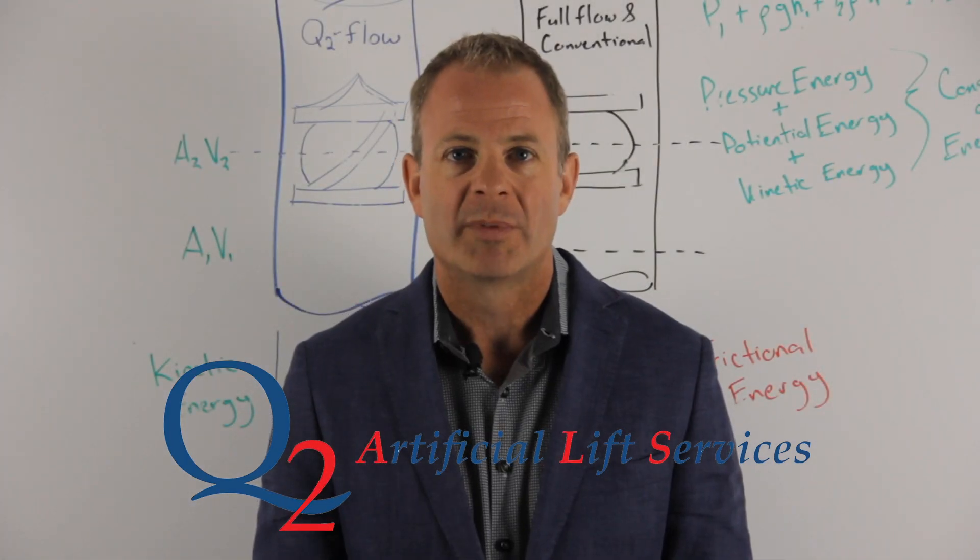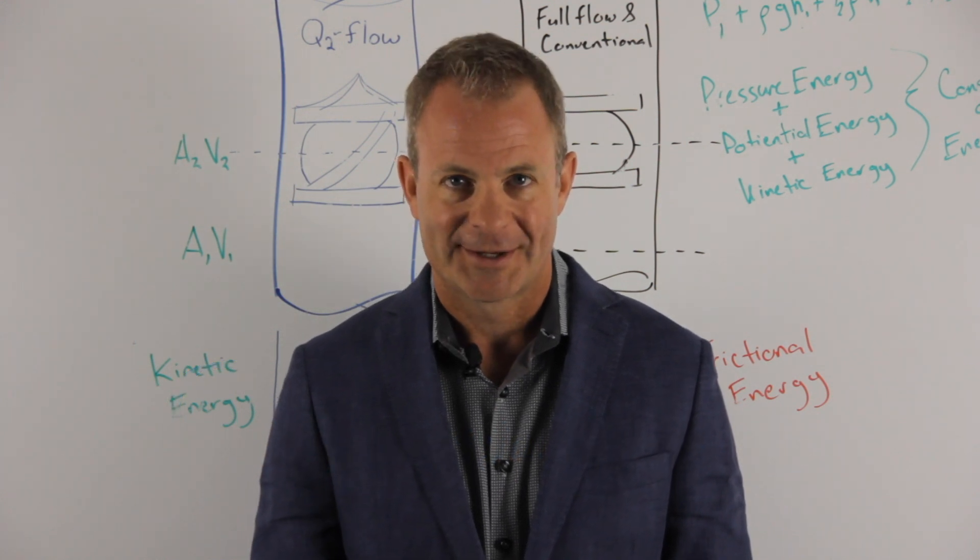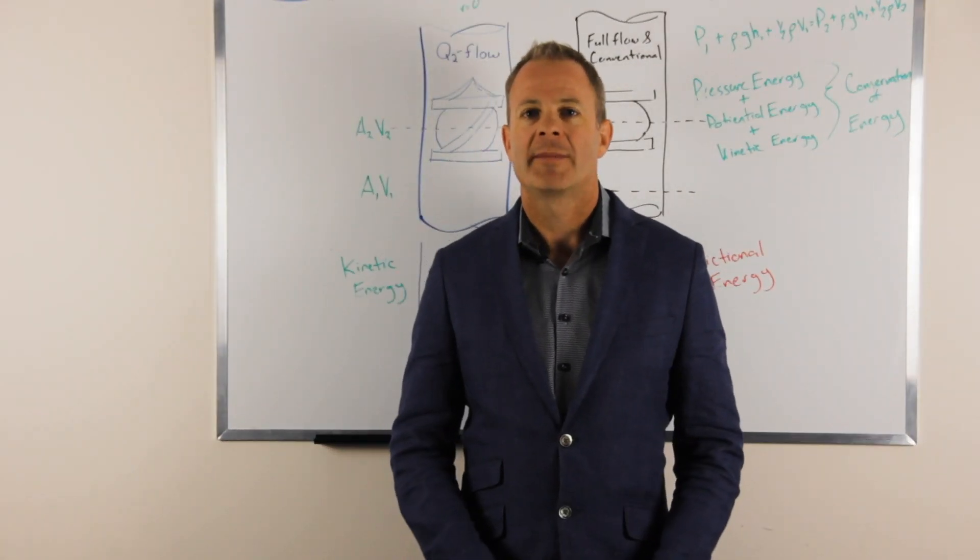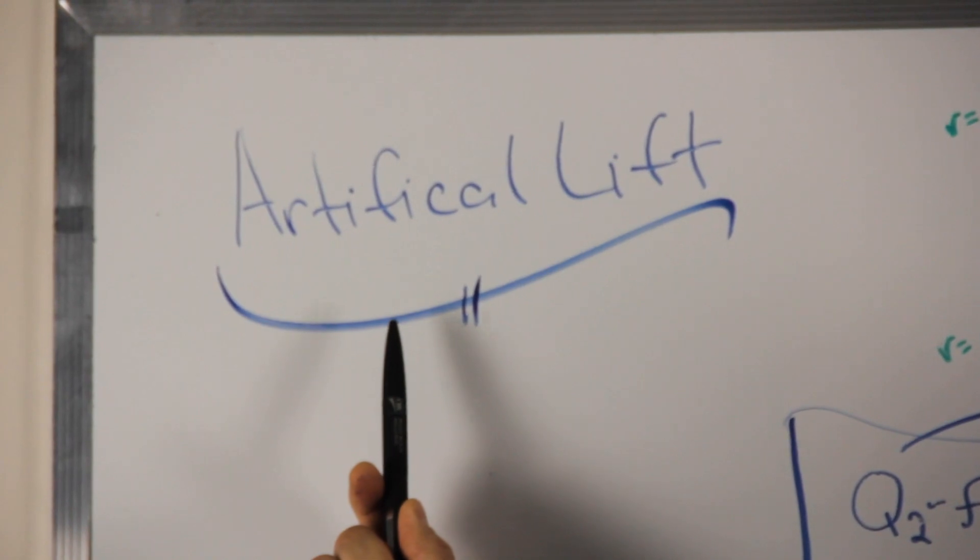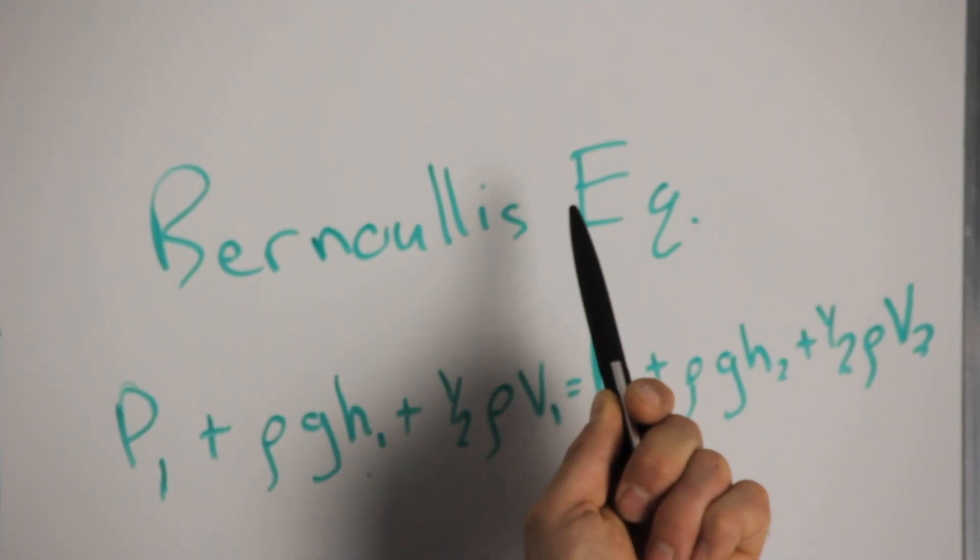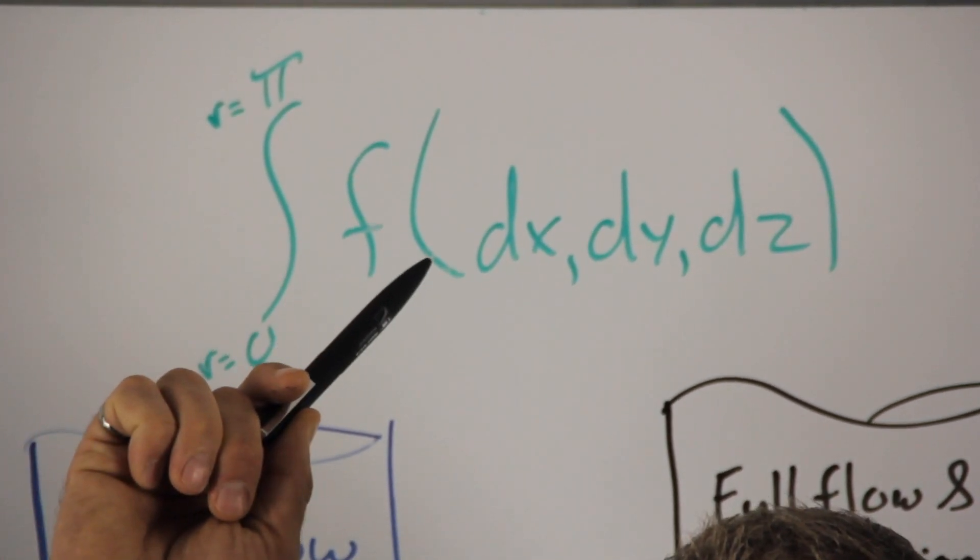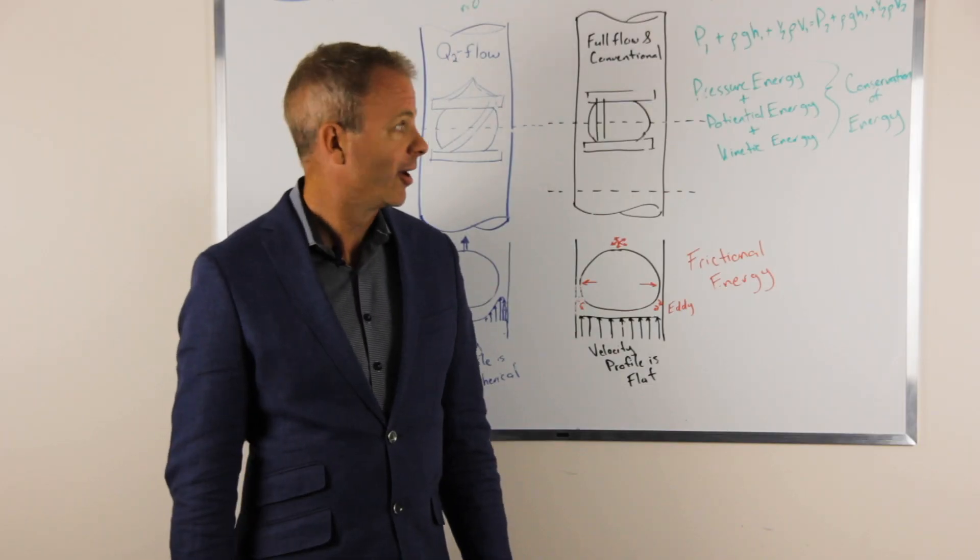Hi, my name is Corbin Coise. I'm a professional engineer with Q2ALS. Today I'll be describing artificial lift, Bernoulli's equation, and a formula that I derived after 15 years of experimentation with traveling and standing valves.